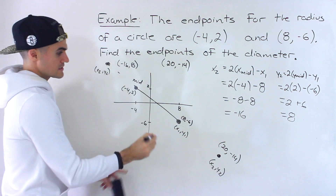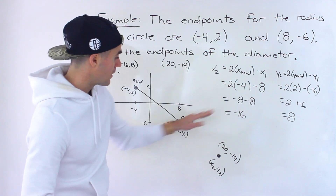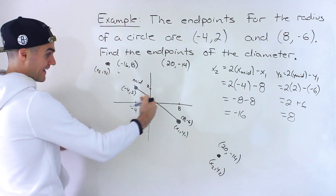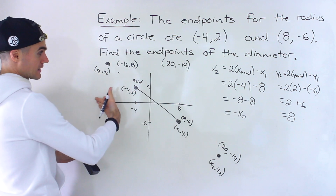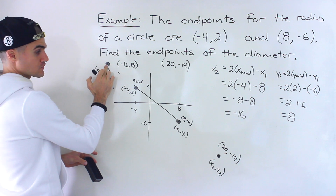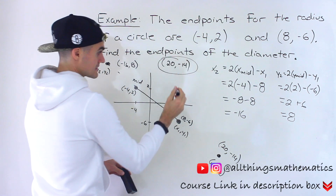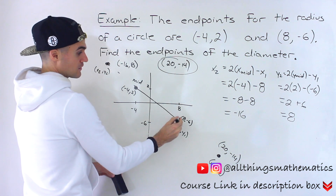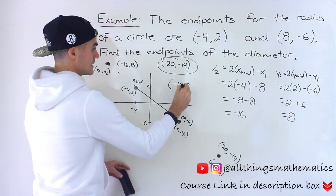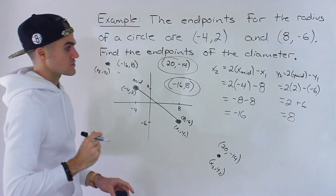Notice that these coordinates make sense. For the first solution, 20 and negative 14, the x-value is positive and the y-value is negative. For the second solution, negative 16 and 8, the x-value is negative and the y-value is positive. So the endpoint of the diameter is either 20 and negative 14 if 8 and negative 6 is the center, or negative 16 and 8 if negative 4 and 2 is the center.